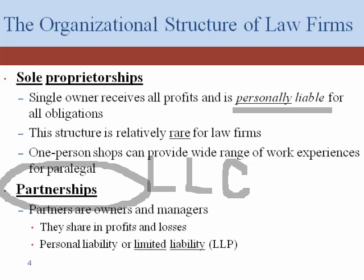With a general partnership, it's very easy to create, and the owners — in this case called partners — have unlimited personal liability. So it has those two characteristics. The distinction, of course, is that a partnership has more than one owner, where the sole proprietorship only has one owner. That's what's called a general partnership.